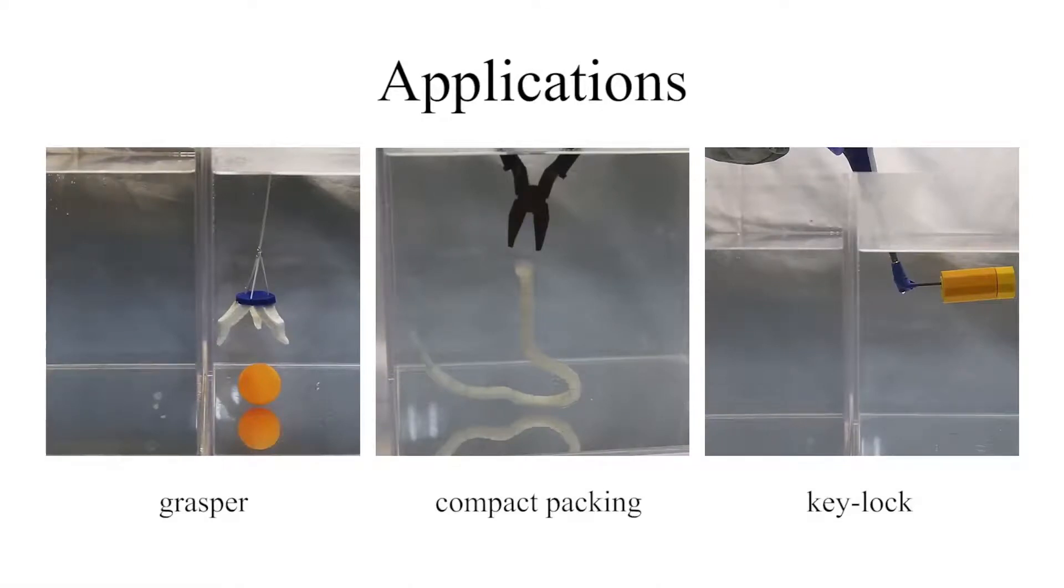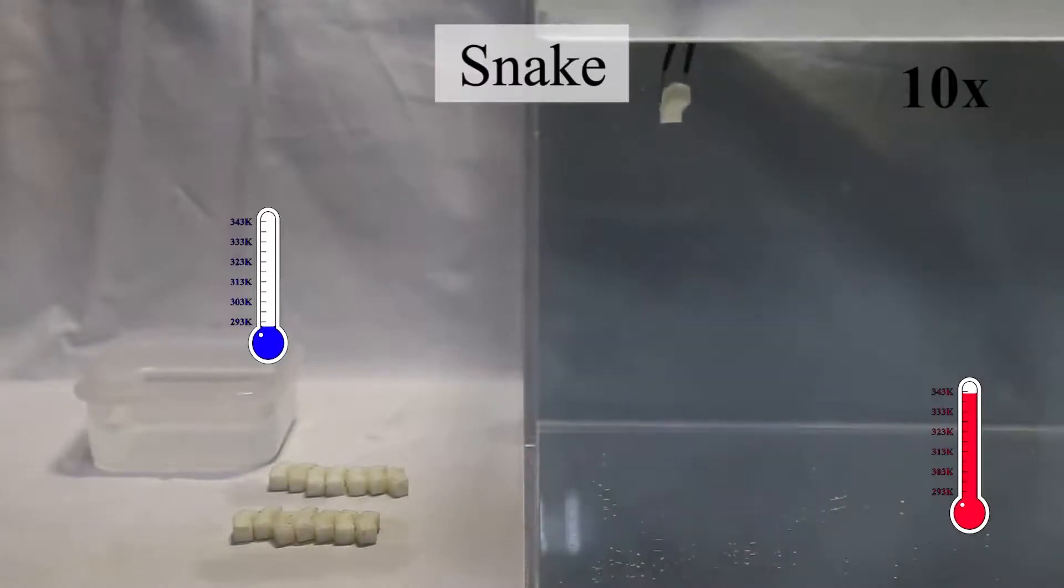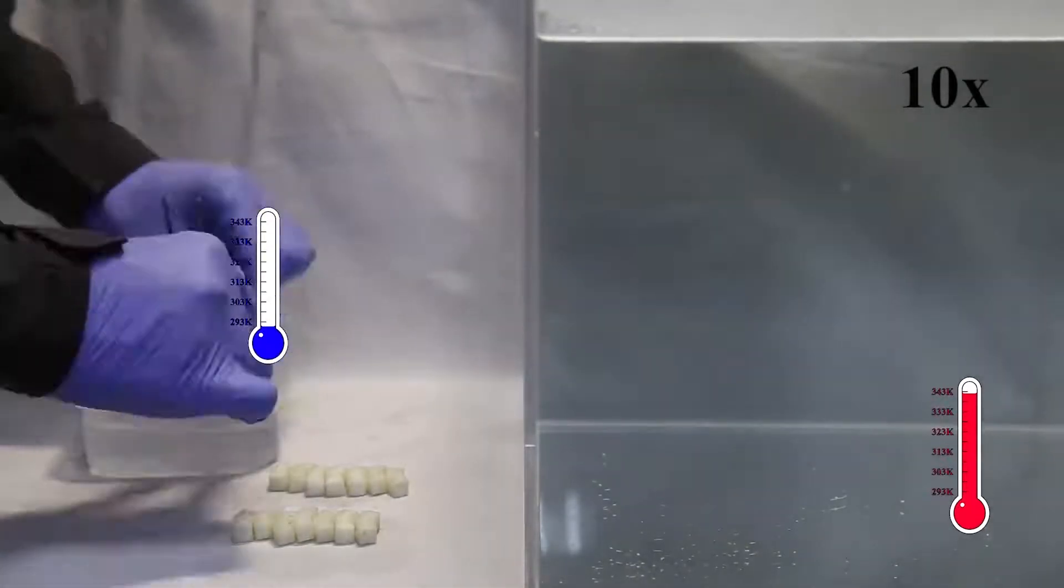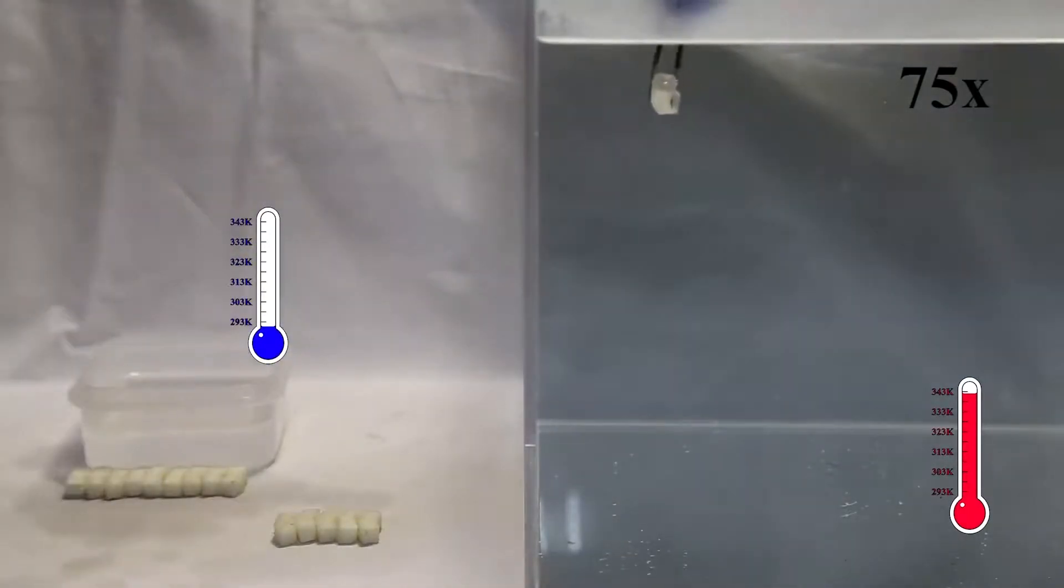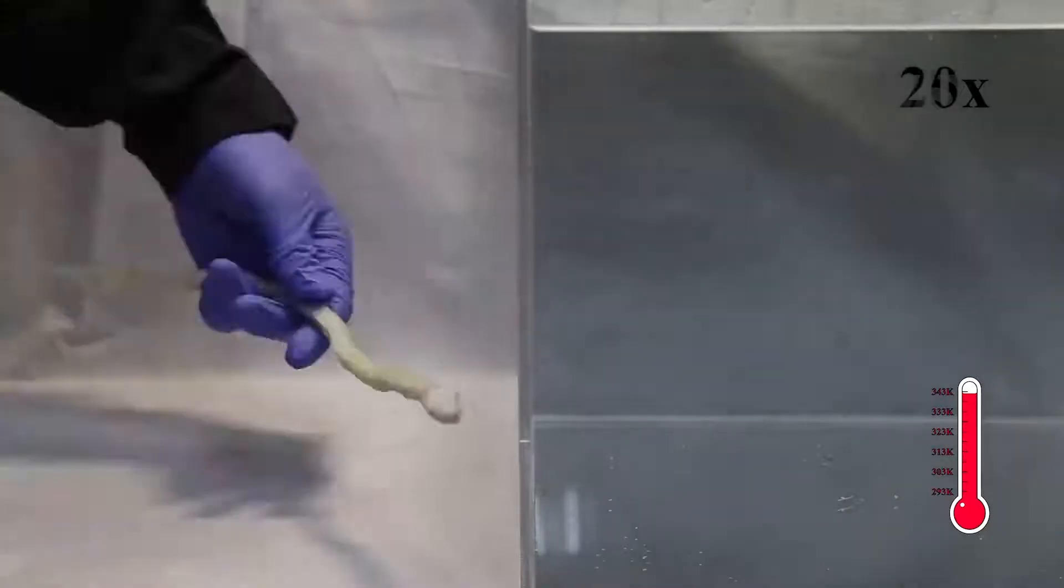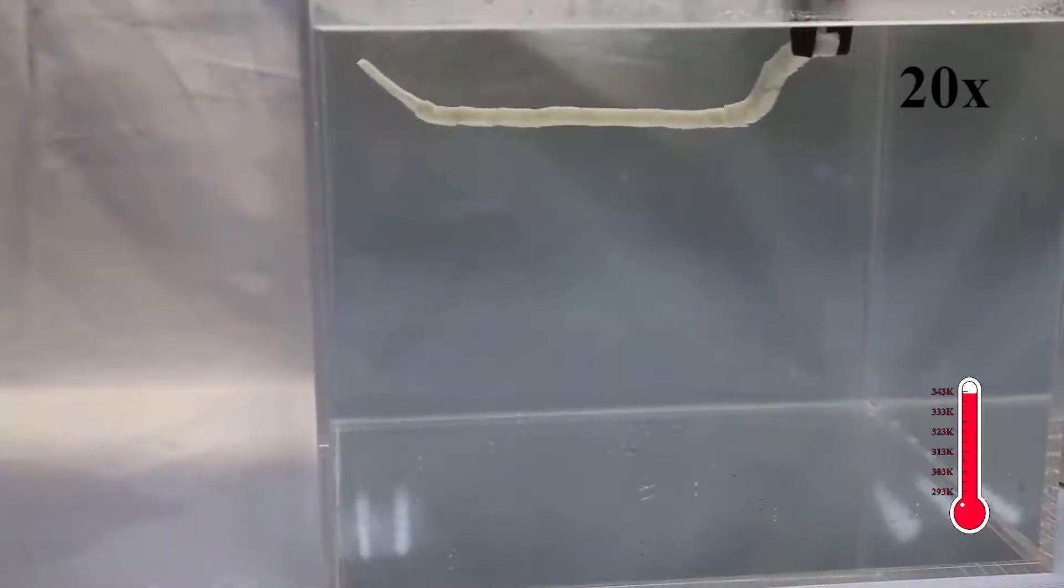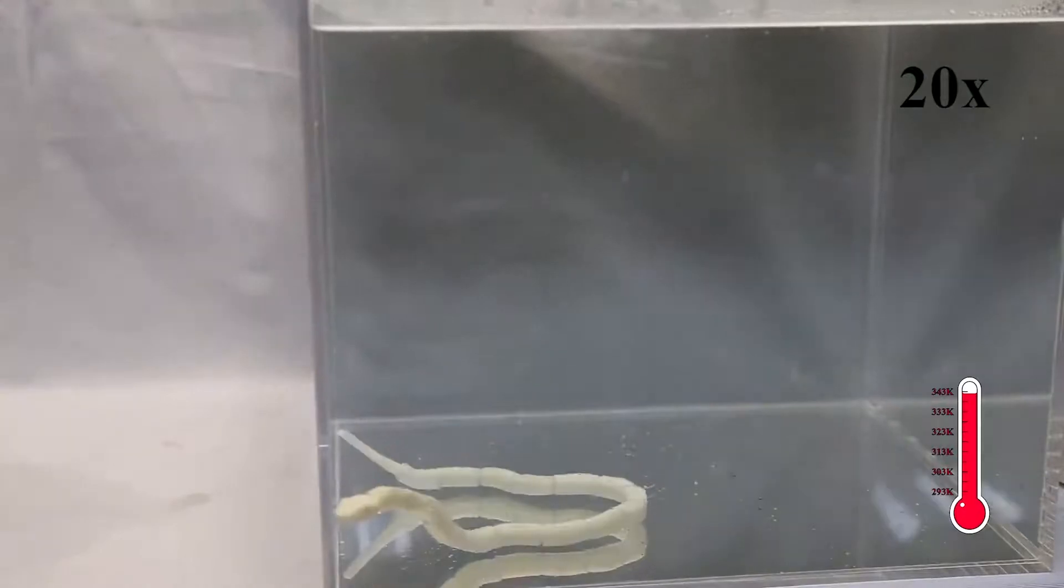Our approach can be used in several applications. First, we show a design for a densely packed self-actuated object. As shown in this video, the snake model consists of a sequence of assembled pieces. Each piece is optimized individually as a cuboid, thus all of the pieces can be compactly stored for transportation. Then we assemble these cuboids together and deform them into the original snake shape by heating them.